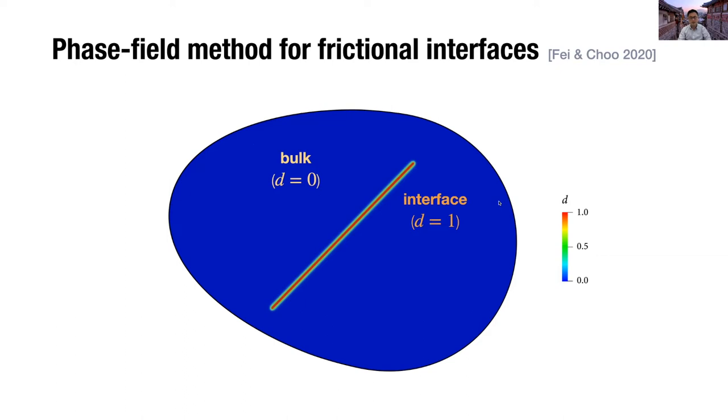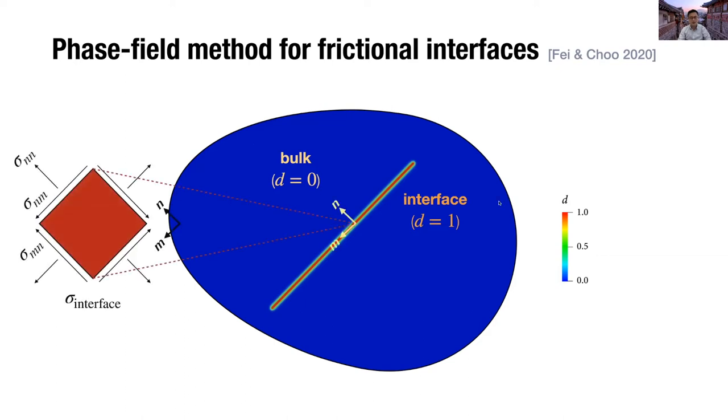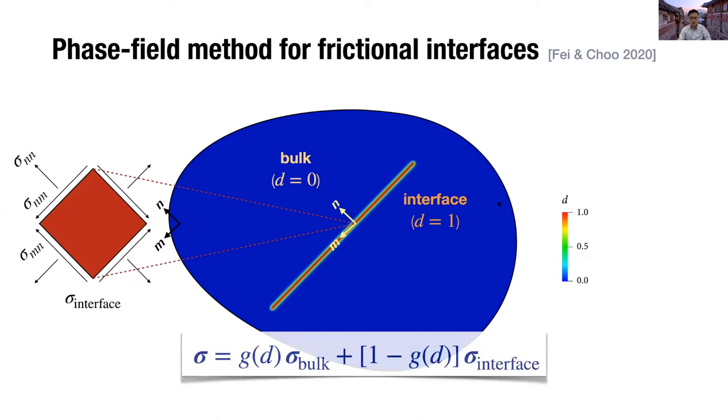In standard phase field model, for open fracture, this interface region is zero. But for closed crack, this interface region allows stress. And the stress, which we call sigma interface, can be calculated in an interface-oriented coordinate system like this.